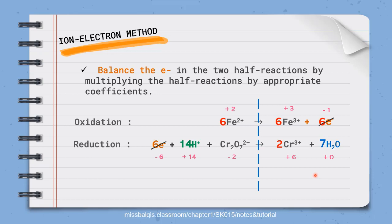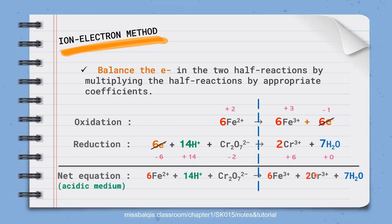Lastly, transfer all the species on the reactant and product side respectively. You will get your net equation of 6 Fe2+ plus 14 H+ plus Cr2O7 2-. Basically, everything in here comes from the reactant sides to form 6 Fe3+ plus 2 Cr3+ plus 7 H2O. This comes from the product side. So this net equation is now in acidic medium. It is acidic because it contains H+.